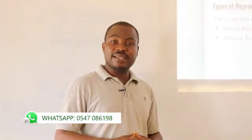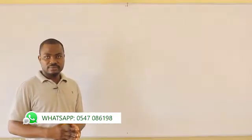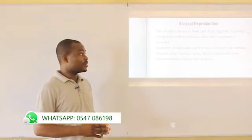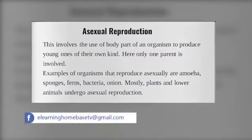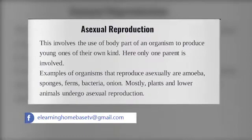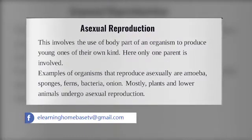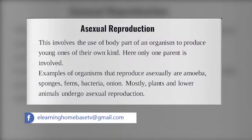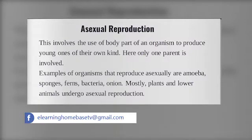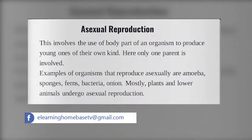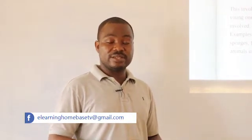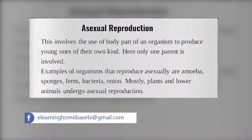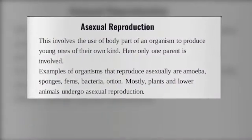Let's look at asexual reproduction first, then we will move on to sexual reproduction. Asexual reproduction is the type of reproduction that involves the use of body parts to reproduce young ones of their own kind. In asexual reproduction, only one parent is involved. Also, no gametes are formed or used — the male gamete or the female gamete are not used in asexual reproduction.